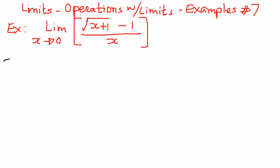If we were to look at the problem, the way we want to solve this one is as follows. If we were to substitute the value of x equals 0, both the numerator and the denominator will go to 0. So that is a trivial solution. We are looking for a non-trivial solution, and therefore to arrive at a non-trivial solution, we're going to rationalize the numerator part.